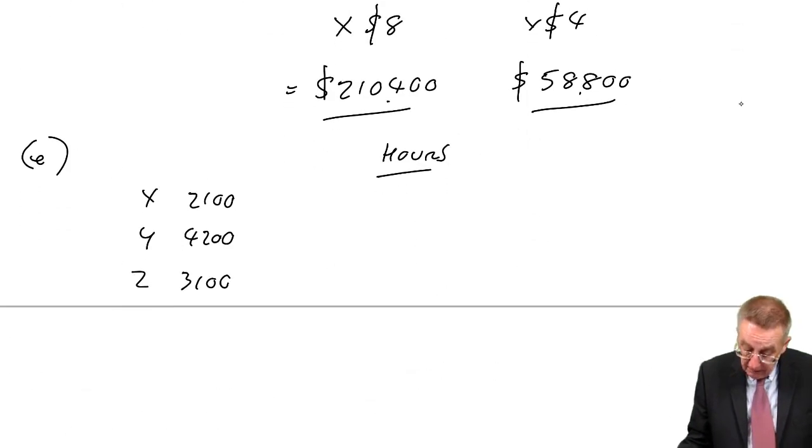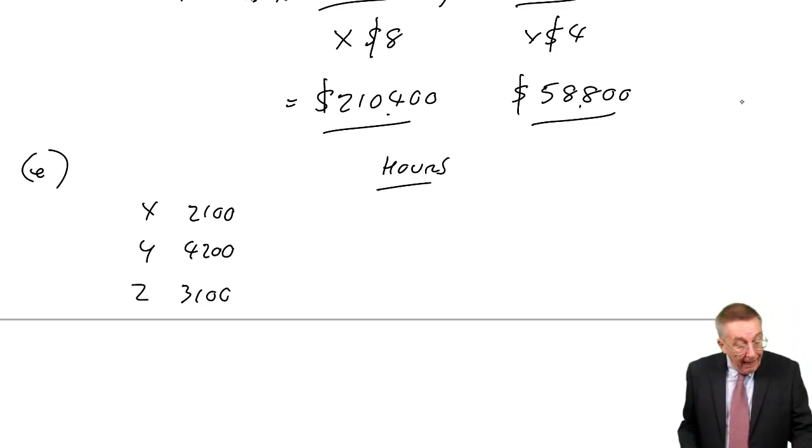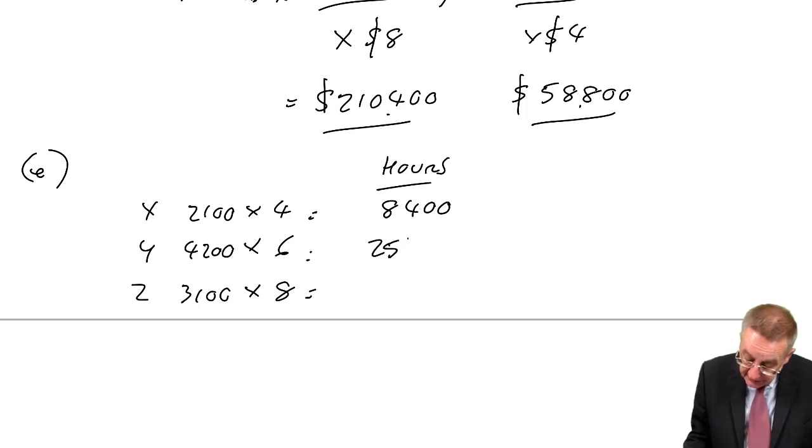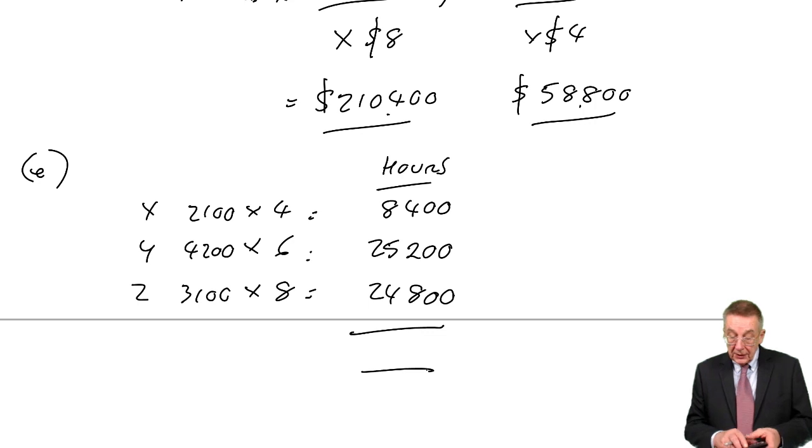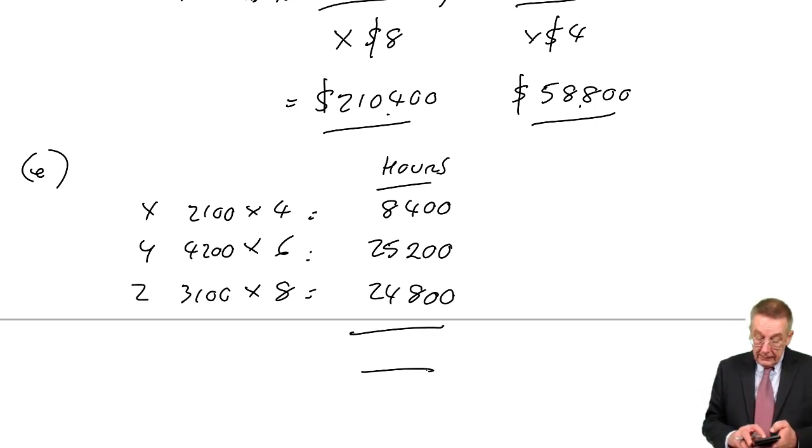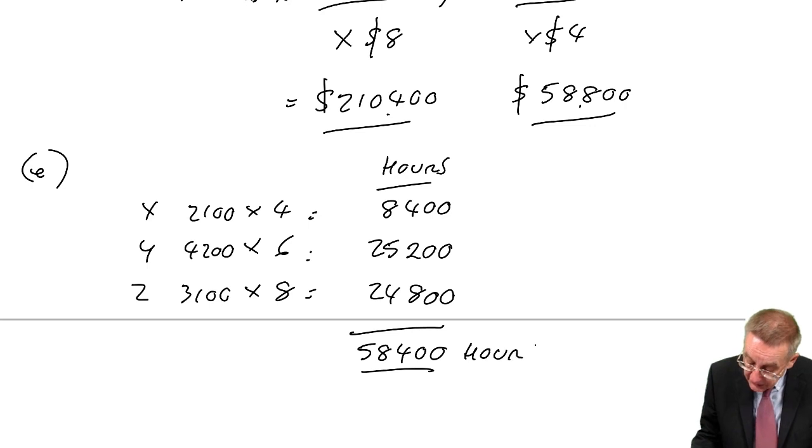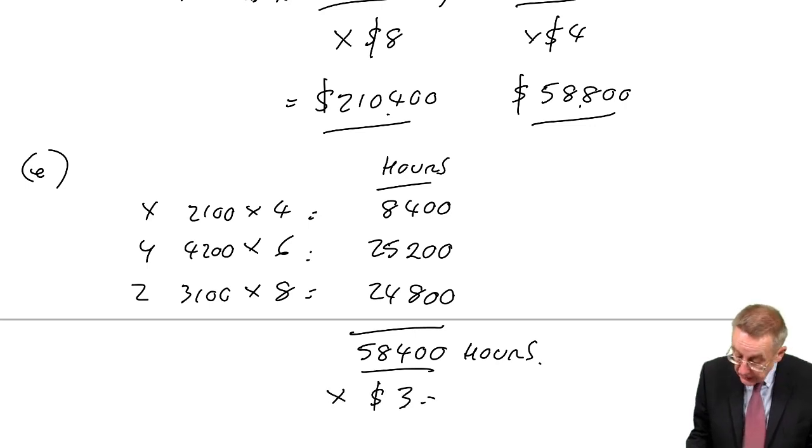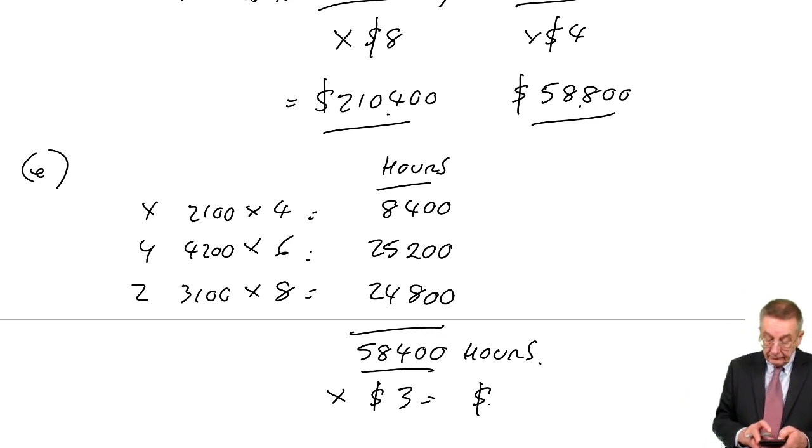So there's how many units we're budgeting on producing. The labour hours: X is four hours, Y is six hours a unit, Z is eight hours. So the budget in hours in total is 8,400, 25,200, 24,800. The total is 58,400. So there's the budget in hours. It also wants to know the value. They're paid at the rate of $3 per hour. So in dollars, $175,200.